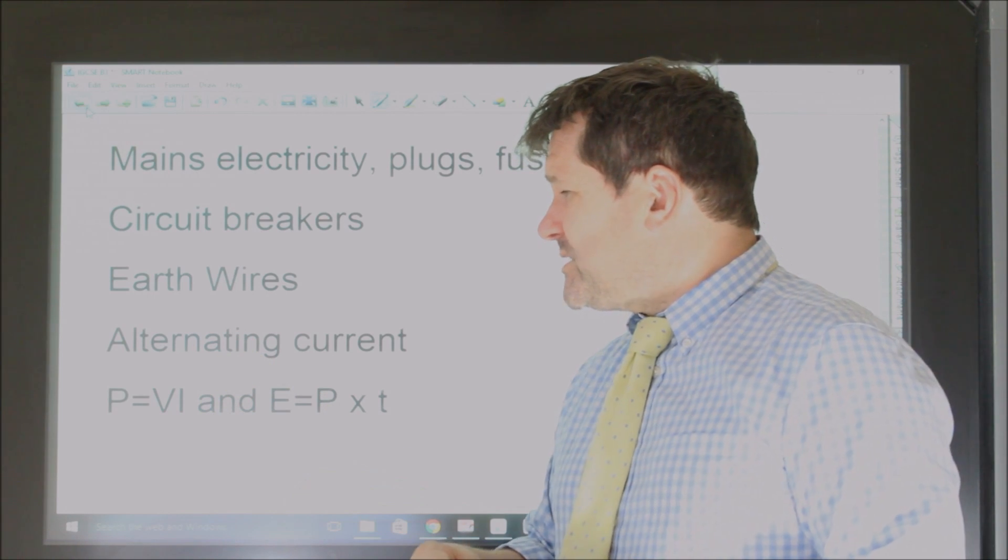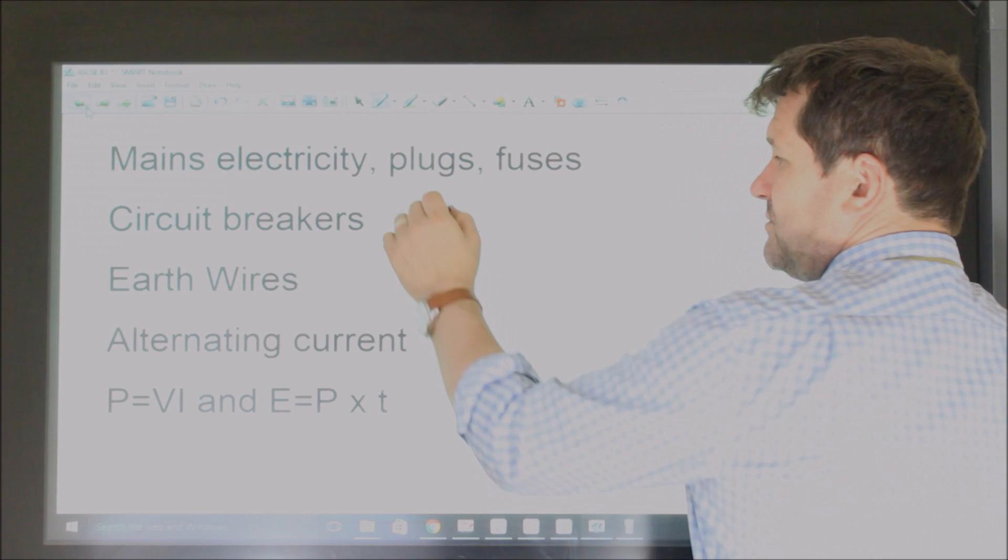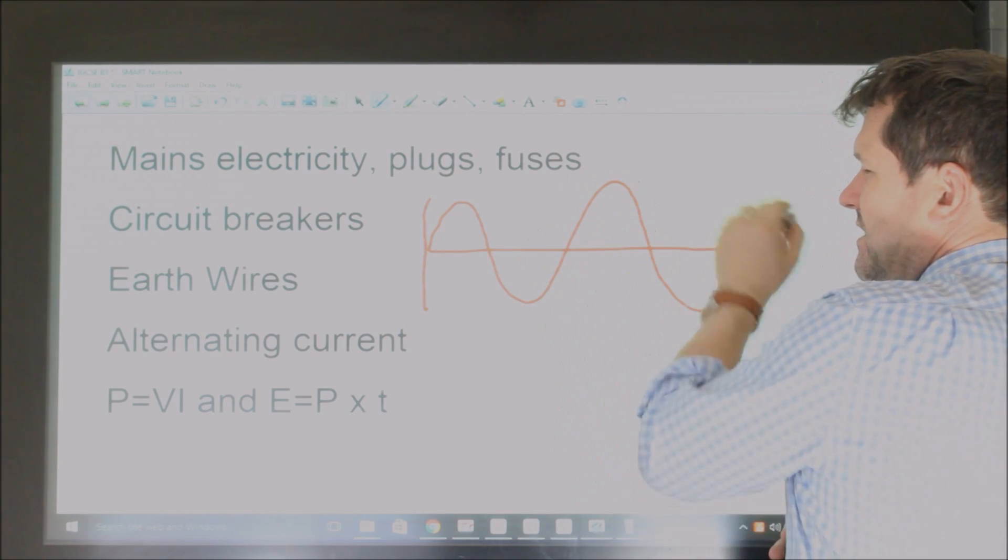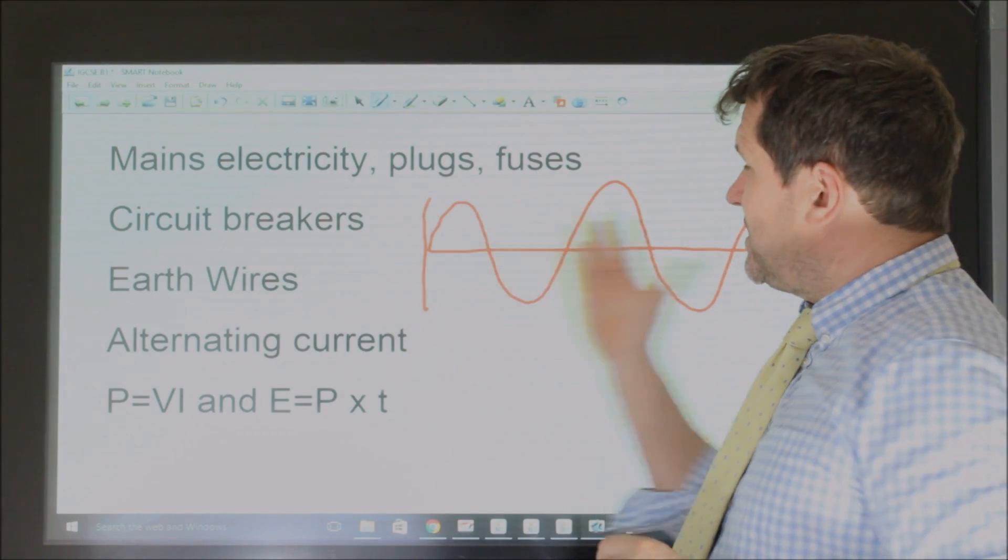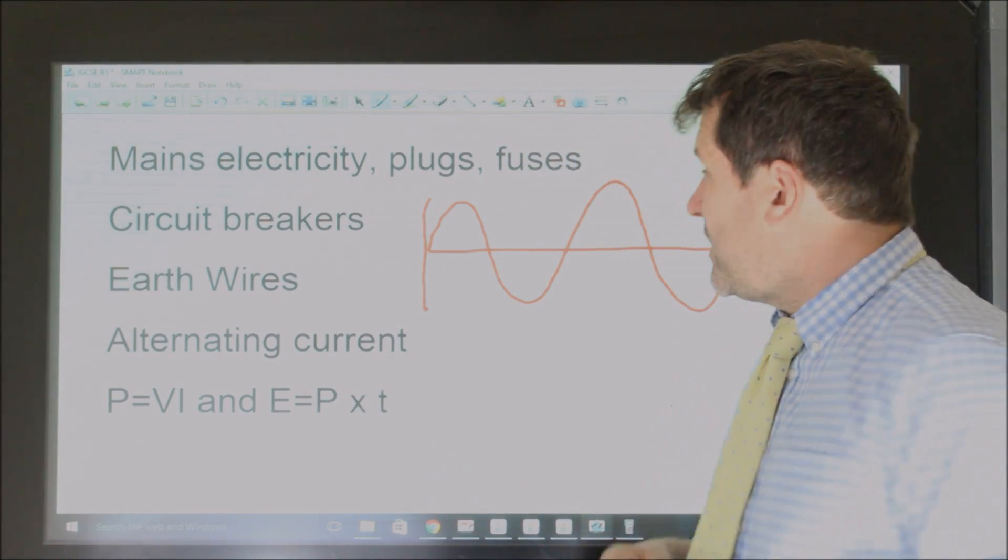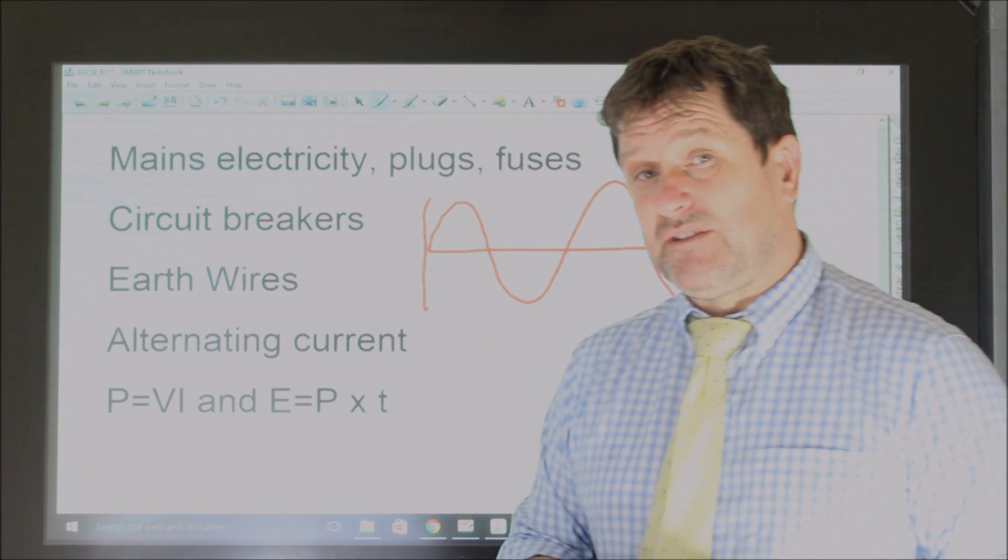Now it's also important to realise, like I mentioned earlier, that electricity when it comes to your home comes as an alternating current which alternates backwards and forwards at around 50 hertz. And we'll go into that later in more detail when we look at the time periods and the frequency of these things.